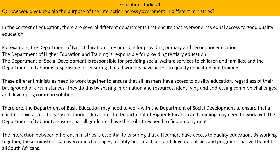Therefore, the Department of Basic Education may need to work with the Department of Social Development to ensure that all children have access to early childhood education. The Department of Higher Education and Training may need to work with the Department of Labor to ensure that all graduates have the skills they need to find employment.